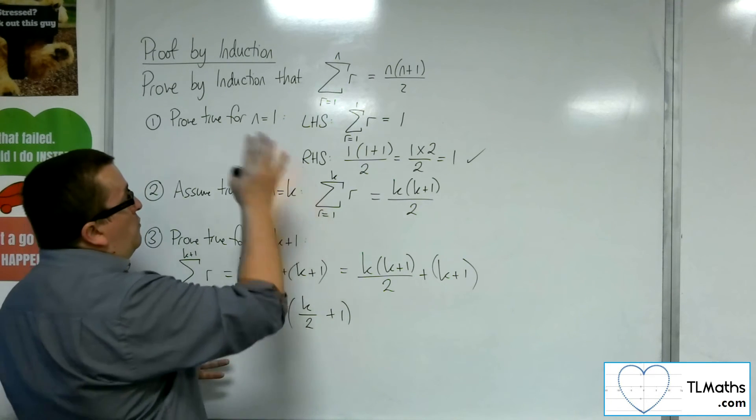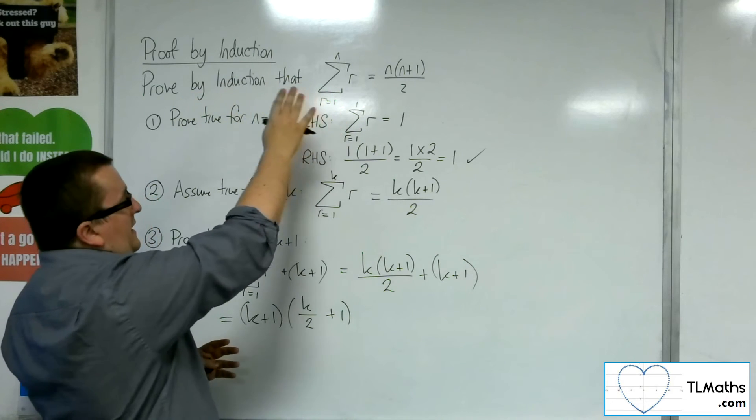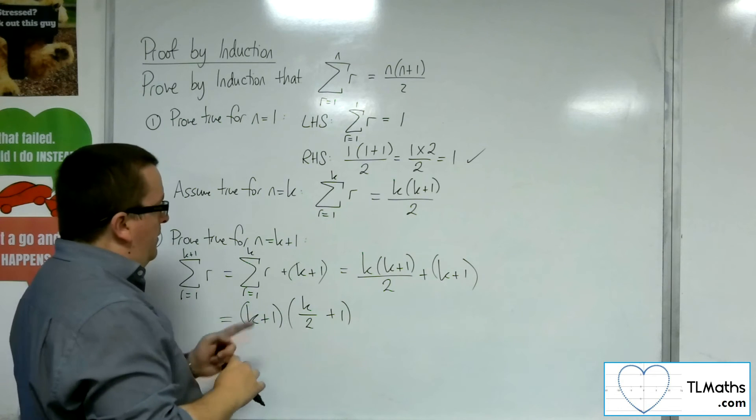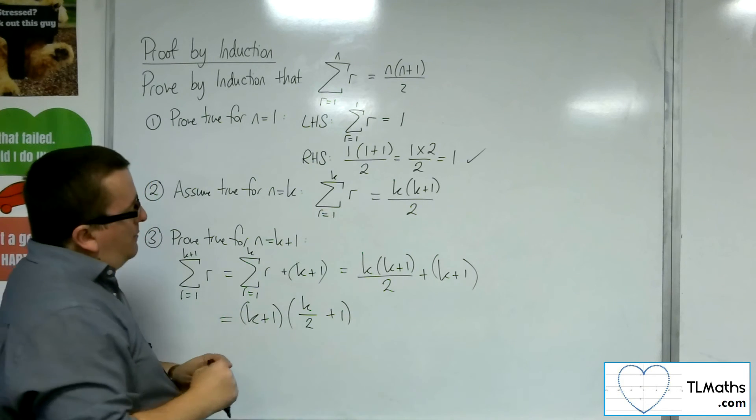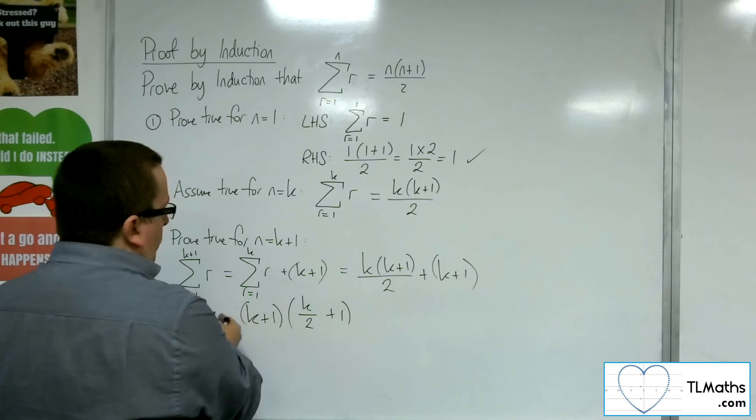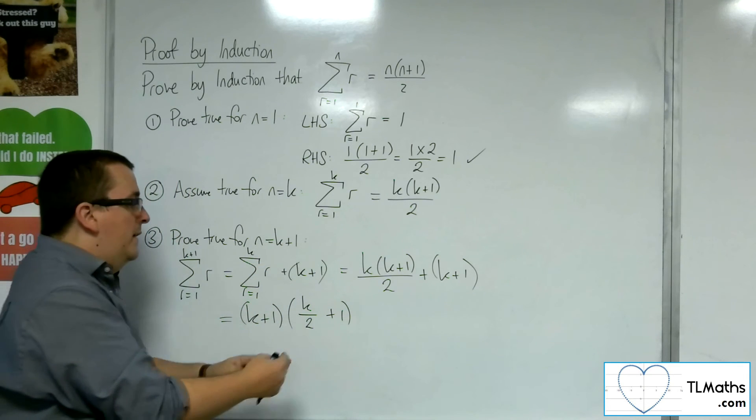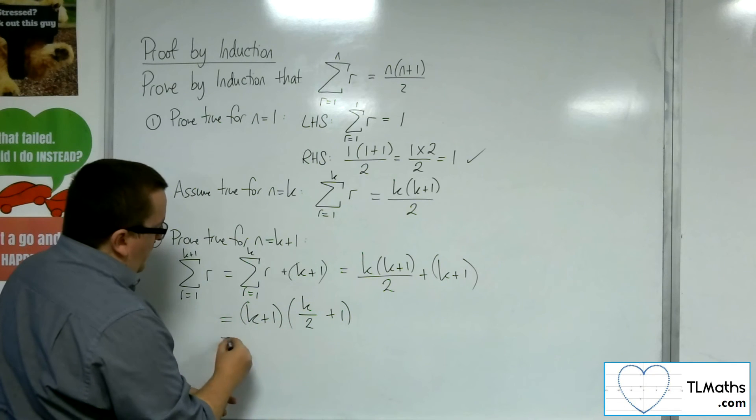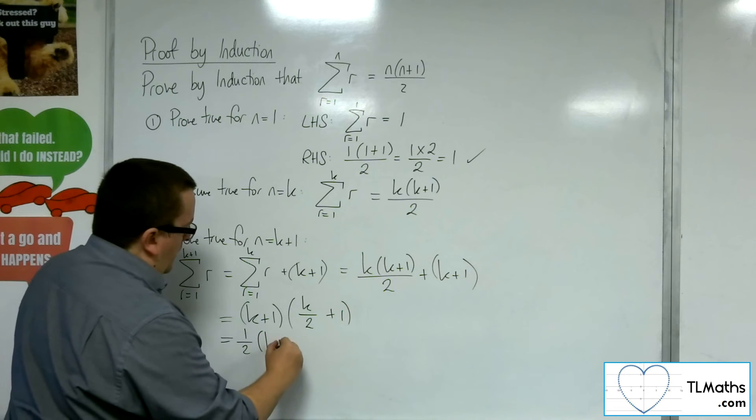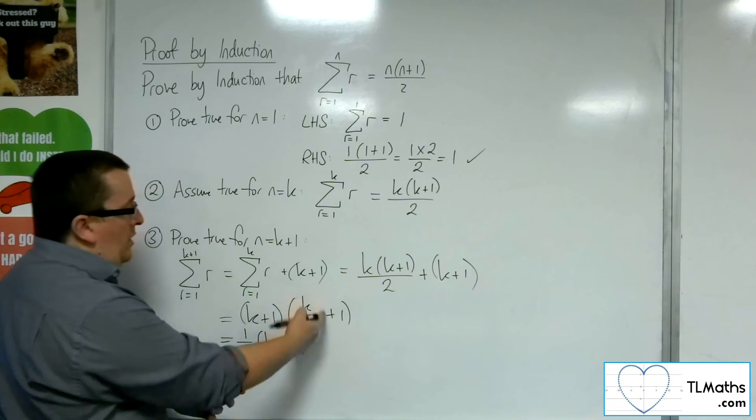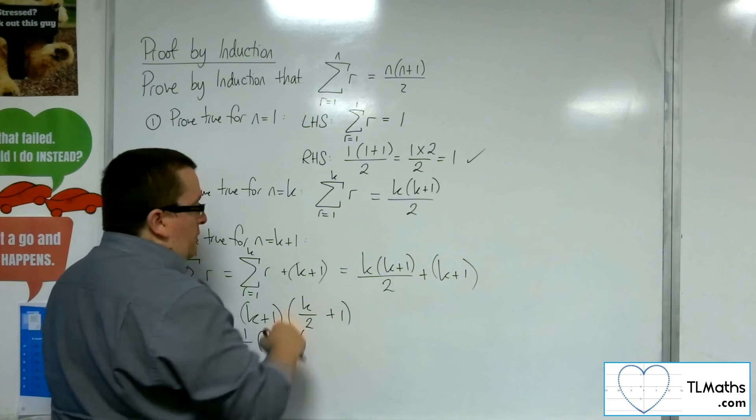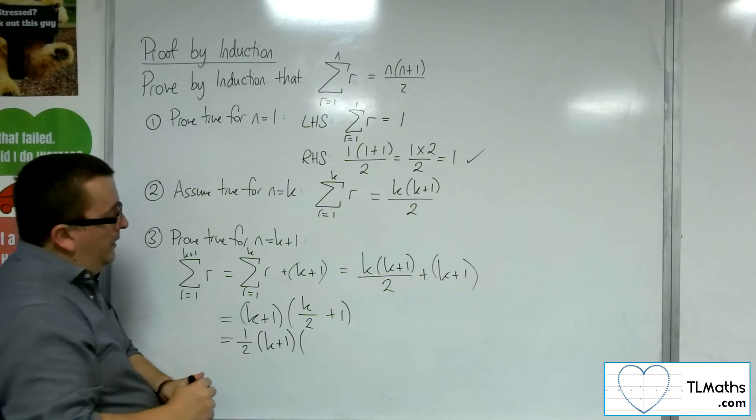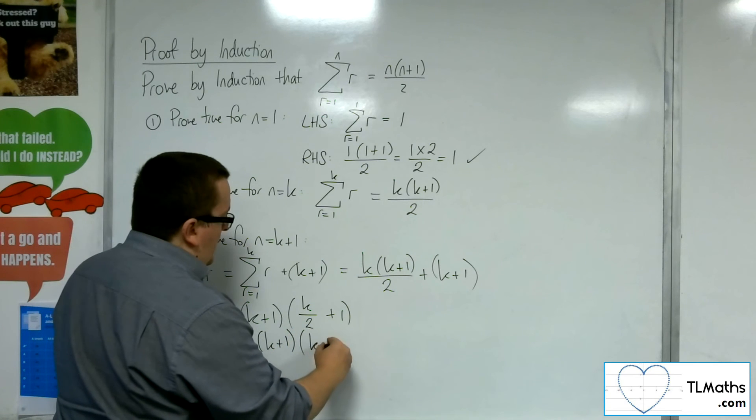Now take a look at what we need to arrive at. We need to have k plus 1 times k plus 2 over 2. We're not quite there. We've got the k plus 1. So what I'm going to do is I'm going to factor the half out of that bracket. Now this is a little odd. This isn't a usual step that you would really think about doing. But if we factor the half out, what that means is that inside this bracket, I must multiply everything through by 2 in order to counteract pulling the half out. So that would leave me with k plus 2.